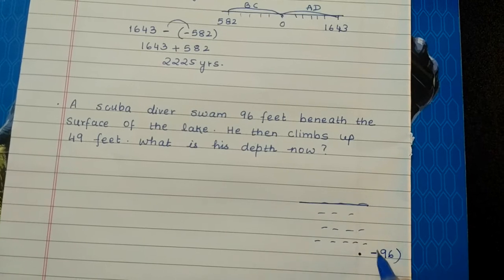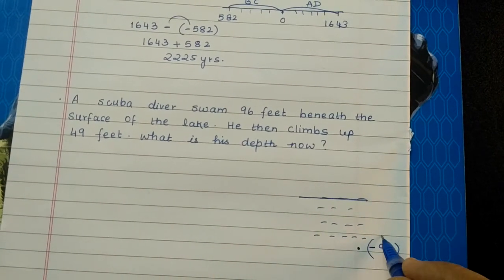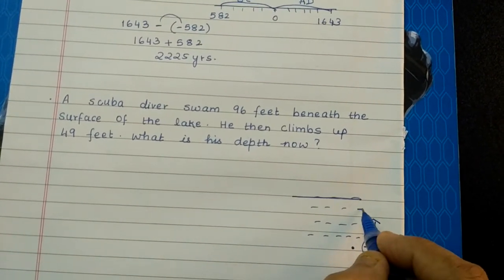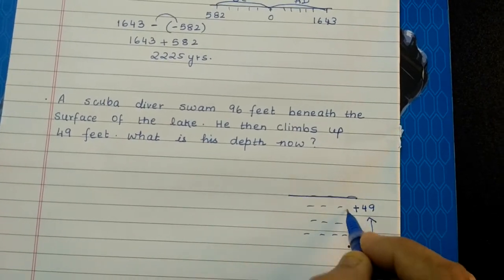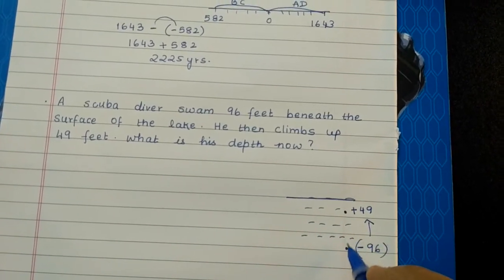So it is minus 96, and then he climbs 49 feet. When he climbs, that means you will add 49 feet. So now he is here. What is the difference between here and here?